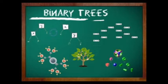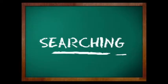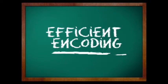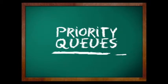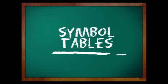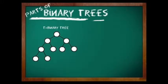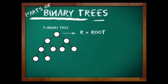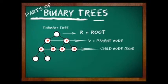Binary tree is an abstract data type that is hierarchical in structure. It is most commonly used in searching, sorting, efficient encoding of strings, priority queues, decision tables, and symbol tables. This is an example of a binary tree — let's name it T. It has a special node, say R, which is called the root. Each node of the root is called the parent node, let's name it P, and each node of P is said to be the child or son of a node.